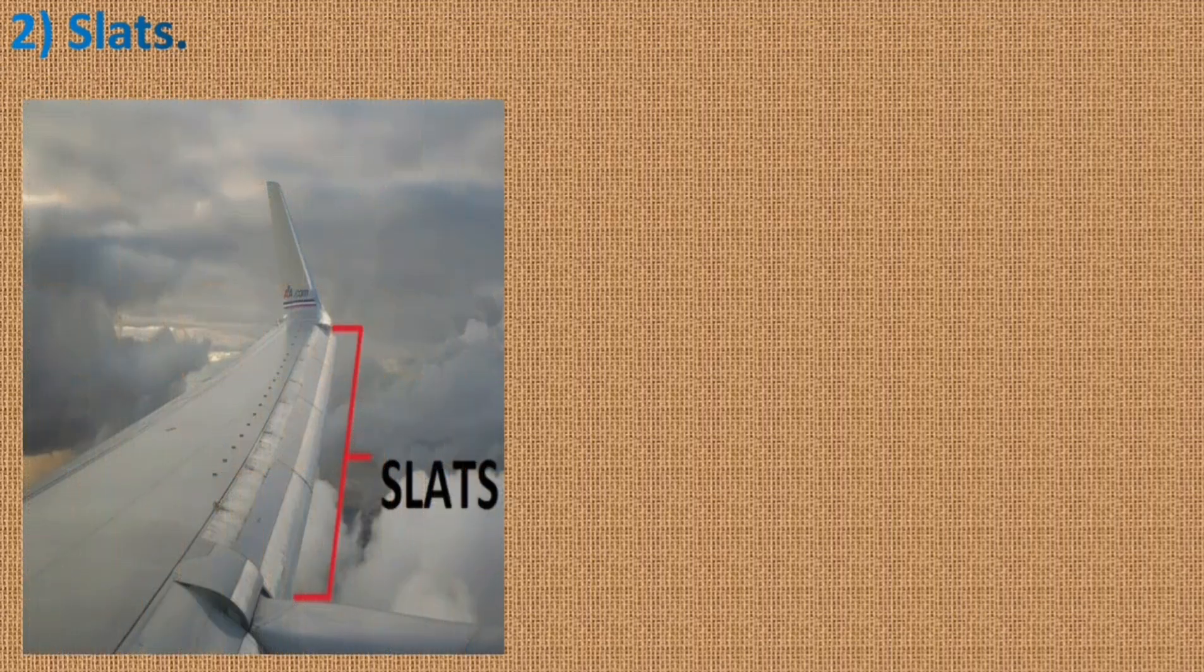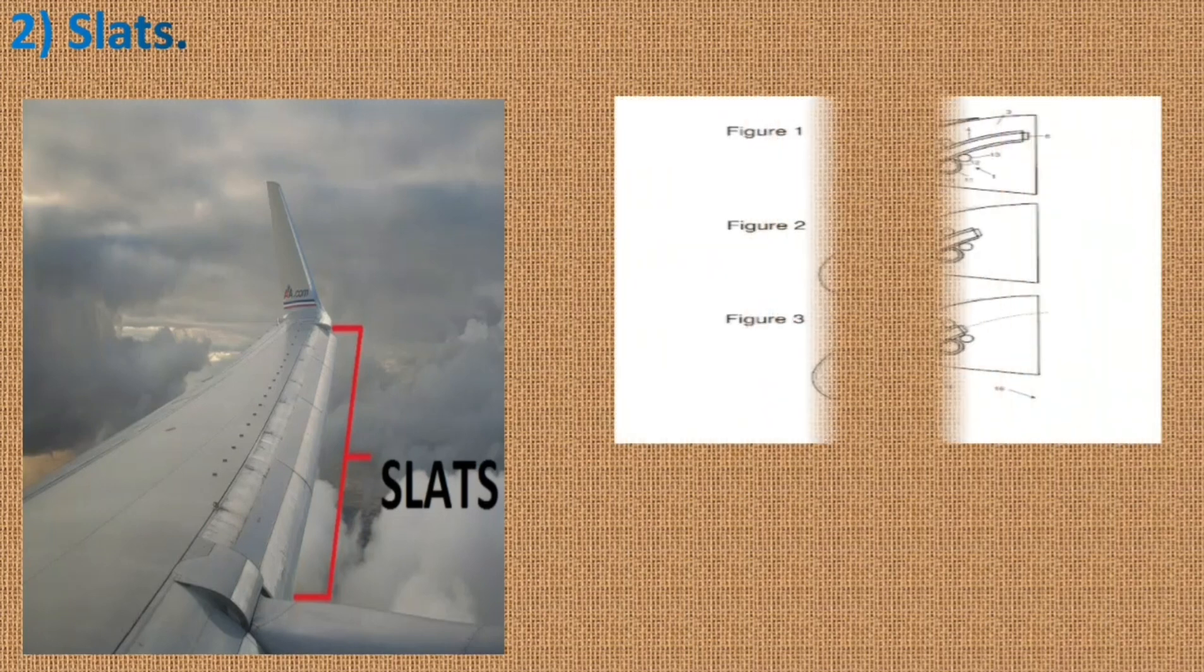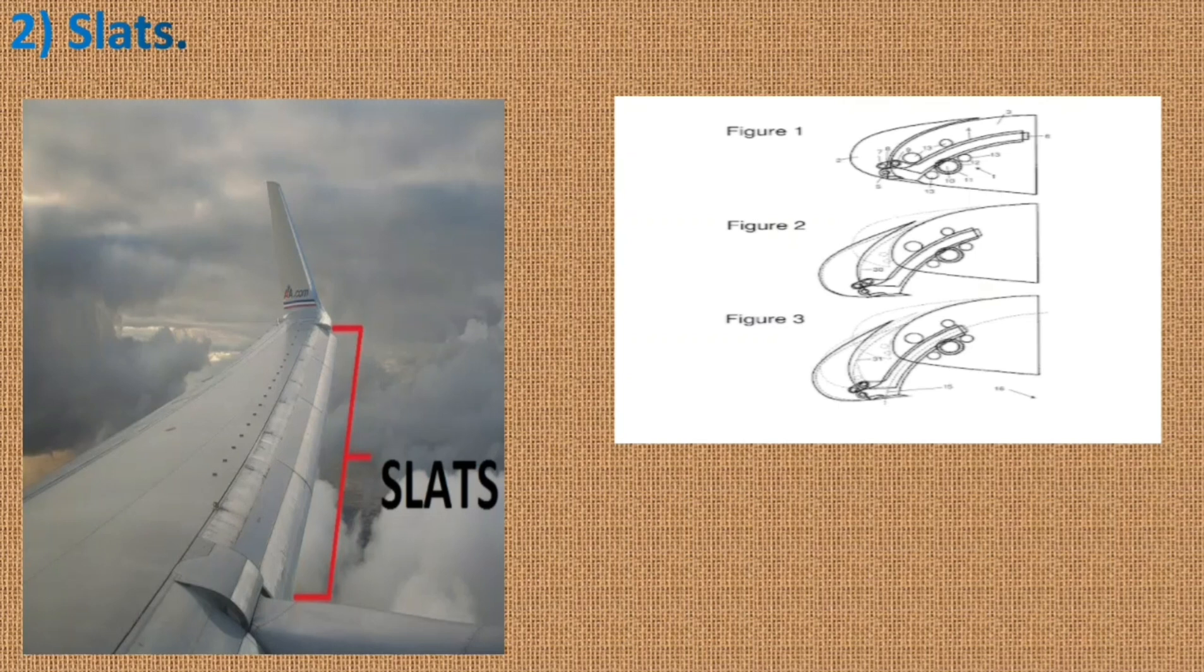Slats are extendable high lift devices on the leading edge of the wing of some fixed wing aircraft. Their purpose is to increase lift during low speed operation such as takeoff, initial climb, approach and landing. They accomplish this by increasing the surface area and camber by deploying outward and drooping downward from the leading edge.